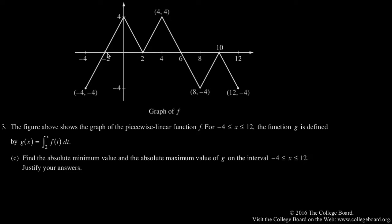We can see here, this is a triangle that is 4 wide and 4 tall, one-half times 4 times 4 is 8. This is a triangle 4 wide, 4 tall, 8. 4 wide, sort of negative 4 tall, so the integral here is negative 8.